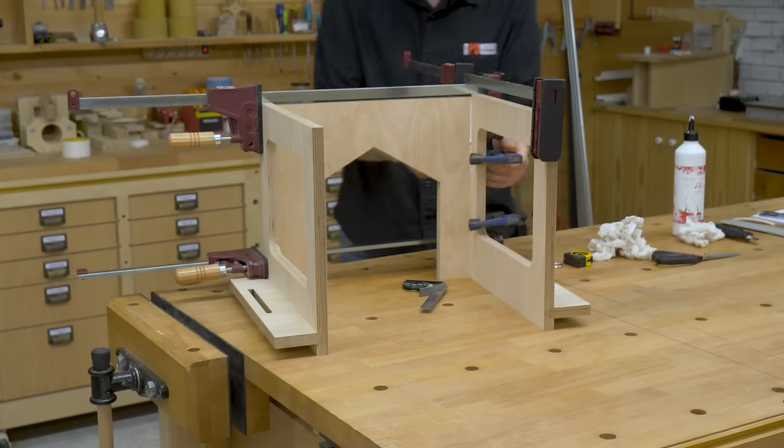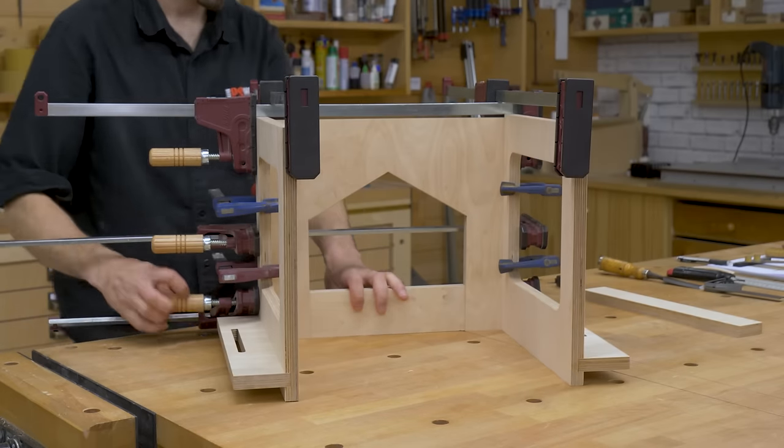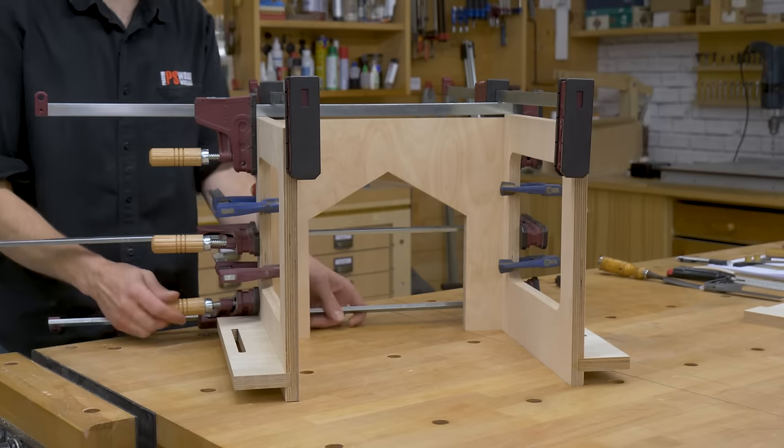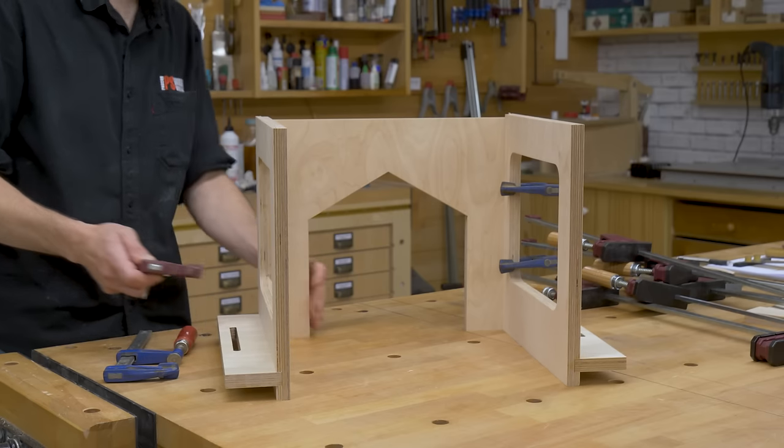It's time to glue the back part. I've had to put some pieces of plywood in the gaps to avoid warping the cabinet when using the clamps. To make this step easier, I believe we could also use screws instead of glue.